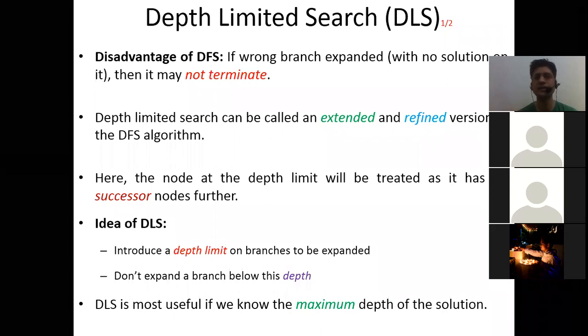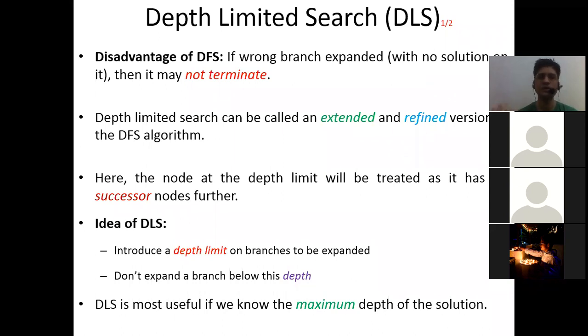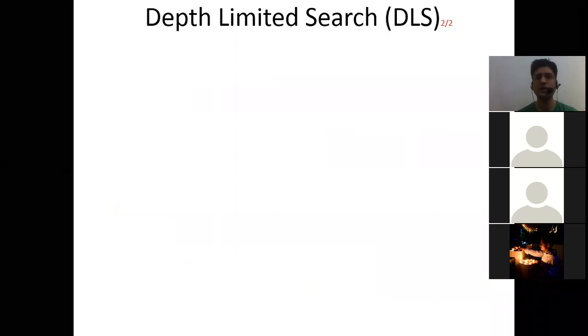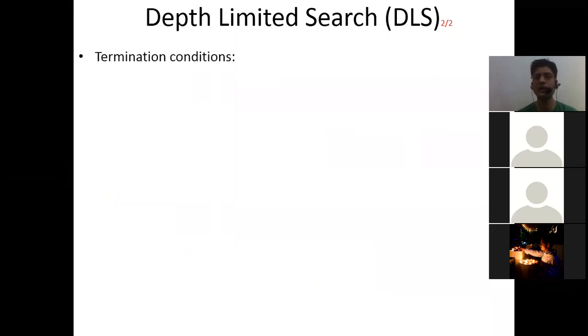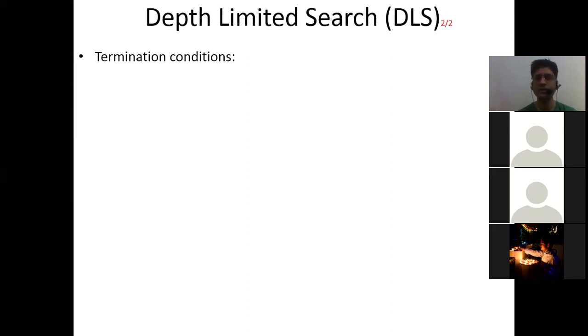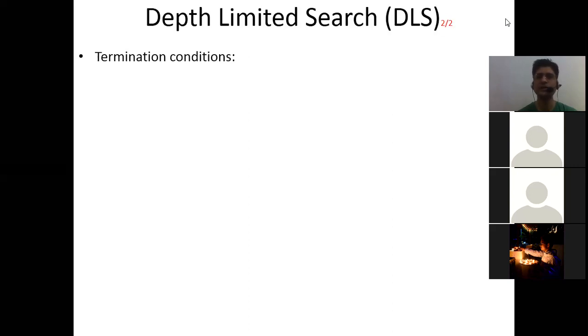Depth limited search is useful when you are already aware of what the maximum depth of the solution may be — at which maximum depth you can get the solution. In that particular scenario, this is useful because you don't have to visit successor nodes below that depth, since you know your goal is within that depth limit. Now, the termination conditions: first, either you get a solution, or second, if you have reached the depth limit without a solution, you also terminate. This is also a disadvantage — if your solution exists below your depth limit, you cannot reach it.